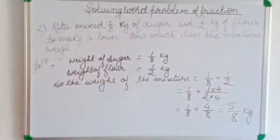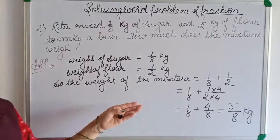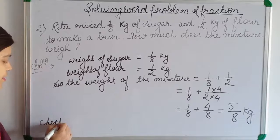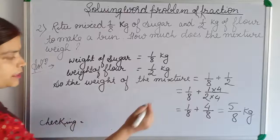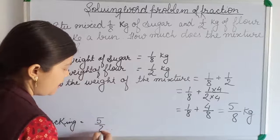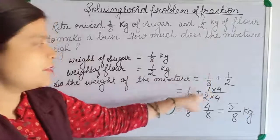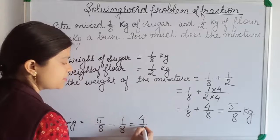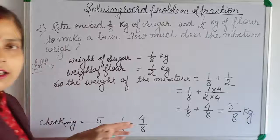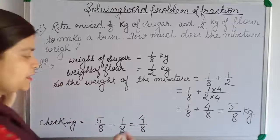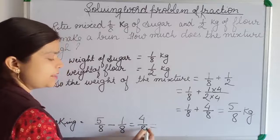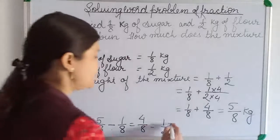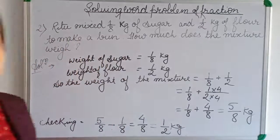The weight of the mixture is 5 by 8 kg. To verify, from 5 by 8 we subtract the weight of sugar, which is 1 by 8, to get 4 by 8 — which is the weight of the flour. Simplifying 4 by 8 by dividing both by 4 gives 1 by 2, which matches the given weight of flour. So the calculation is correct.